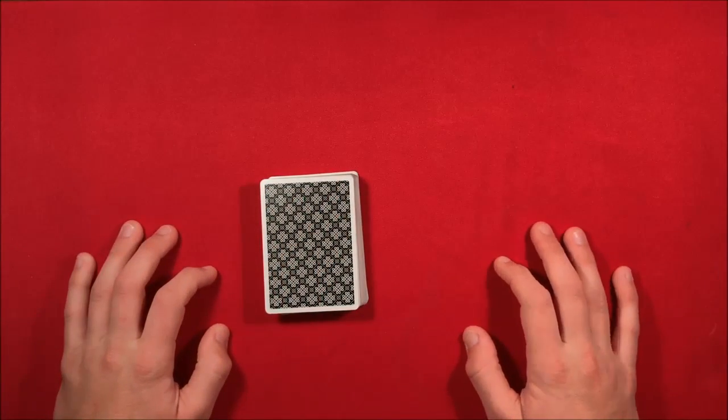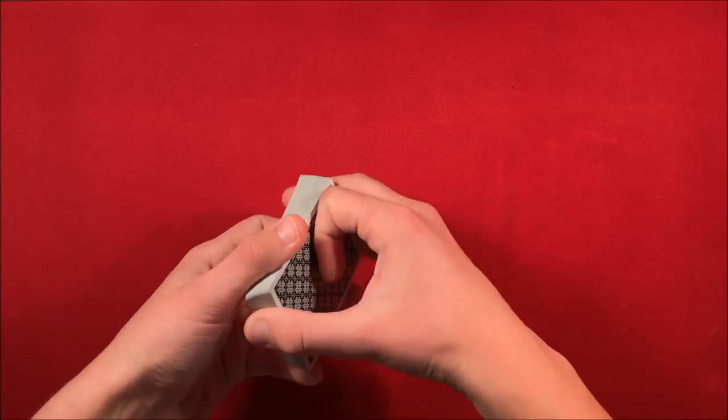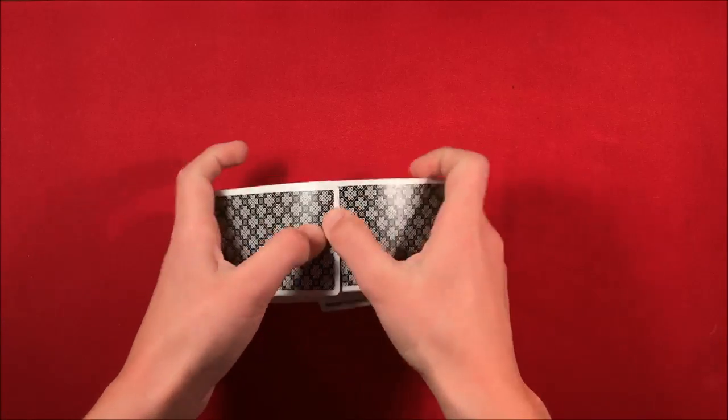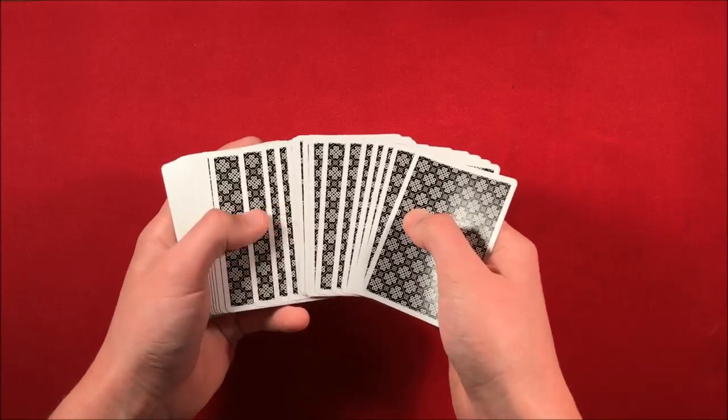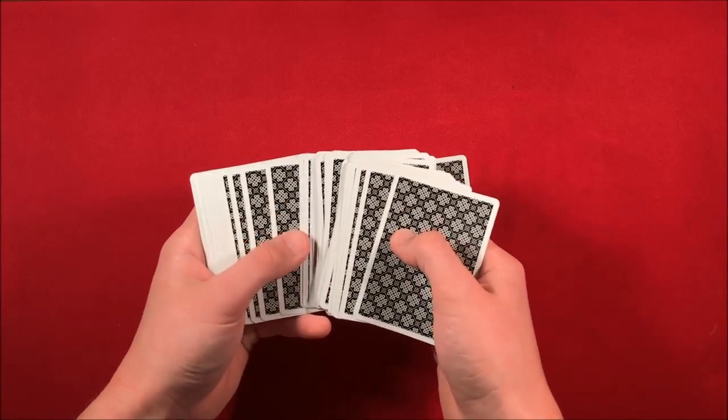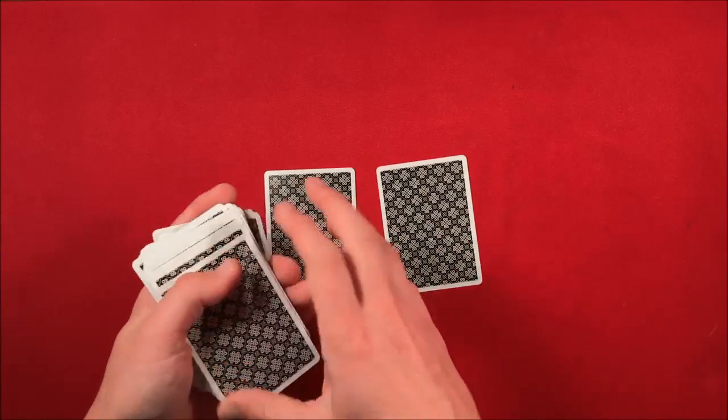The spectators can shuffle it beforehand or you can just use a borrowed deck, but the whole thing is, let's say the spectator, you can start it off. The spectator would shuffle the deck and then they can pick any two cards face down. The trick would work better if you have two spectators, but it doesn't really matter.